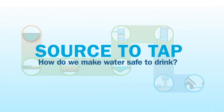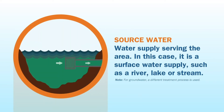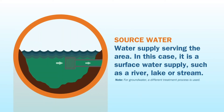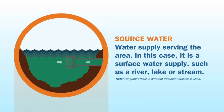How do we make water safe to drink? The process starts with source water — the water serving the area. This could be a surface water supply such as a river, stream, or lake, or it could be an underground well.